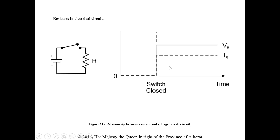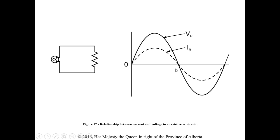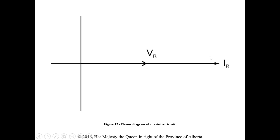In a DC circuit with resistors, as soon as we turn the circuit on, we get maximum voltage and maximum current based on the supply voltage and resistance. If the voltage decreases, the current decreases as well. It's a straightforward relationship because they are in phase with each other. As my voltage is peaking, so is my resistive current — there is no lead or lag associated with this.